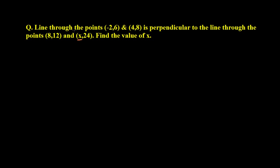Whenever you are going to solve any problem related to straight lines, always try to first make a figure and understand what the question is asking. So we have the points (-2, 6) — suppose this is point (-2, 6) — and another point (4, 8). We have two points, and a line joining these two points.